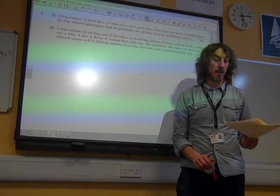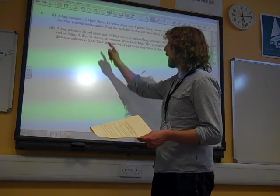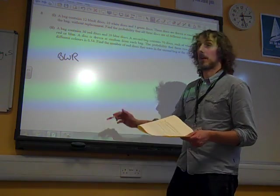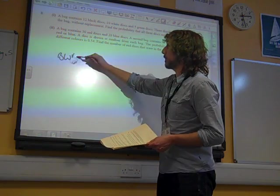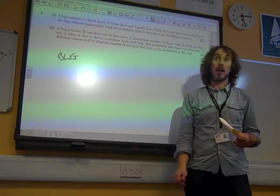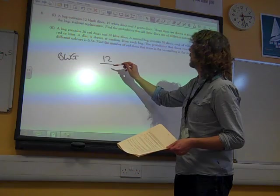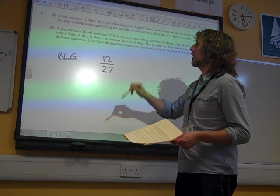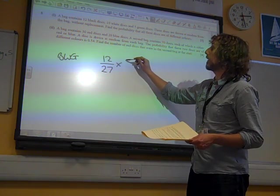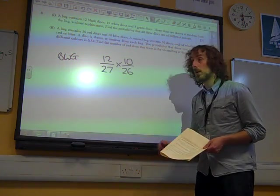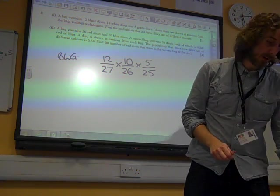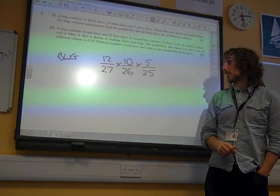So that would be, if we consider the first option, which would be a black, that one. I've used the letter R to stand for red, when in fact it's green. Maybe I'm colour blind. If we used that option, then it would be 12 out of how many other? 27. For the first one. Multiplied by 10 out of 26, because it's without replacement. Multiplied by 5 out of 25. Again, because it's without replacement.